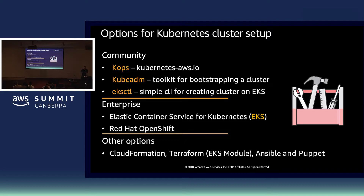At an enterprise or turnkey level, we're looking at things like EKS, but also Red Hat's OpenShift project or product — a fully managed platform as a service which under the covers is powered by Kubernetes. And if you don't want to use any of those tools and prefer to use things like Ansible, Terraform, or even native CloudFormation templates, those are also options for you.